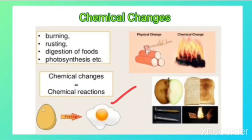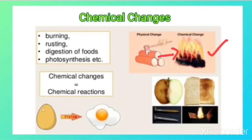As we can see in this picture, the burning process is a chemical change. When we burn something, the substance reacts with the oxygen present in the air and forms a new compound. So we can say that the burning process is a chemical change because a new substance is formed.